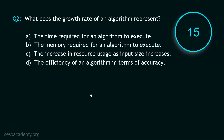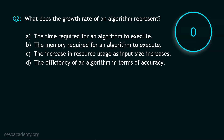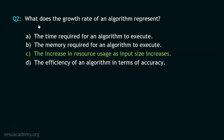Your time starts now. Stop. The correct option is option C — the increase in resource usage as input size increases. What does the growth rate of an algorithm represent? Growth rate represents the increase in resource usage — resources being time and space — as input size increases. This is what growth rate is.